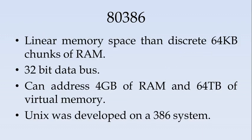Then came the 80386 processors. Here a linear memory space was used instead of the discrete 64 KB chunks of RAM. In 8086 and earlier processors, memory was divided into different segments — stack segment, data segment, code segment — each capable of 64 KB. The 80386 started using linear memory space. It is a 32-bit processor with a 32-bit data bus, and it could address 4 GB of RAM and 64 TB of virtual memory.